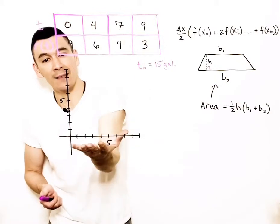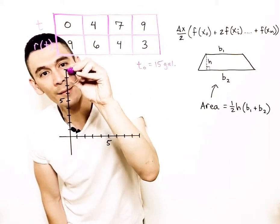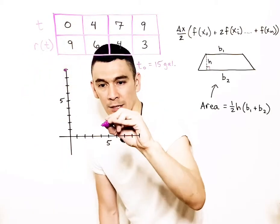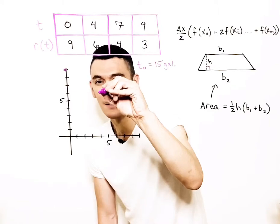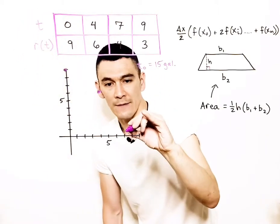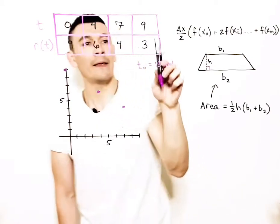So let's take this data and model it. We have 0, 9 right there. We have 4, 6 right here. Then we have 7, 4 would be right there more or less. And then we have 9, 3.